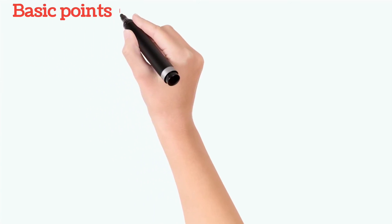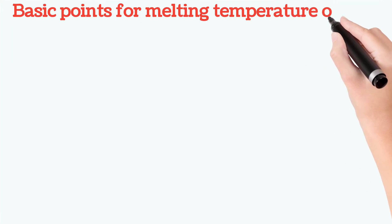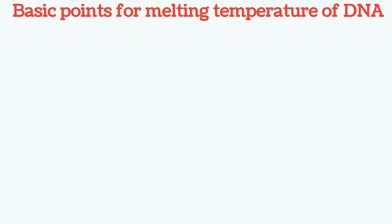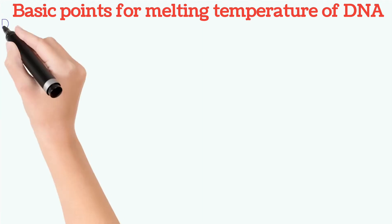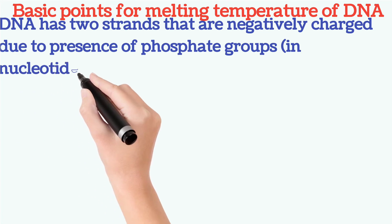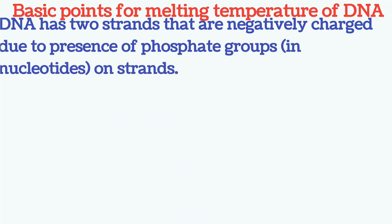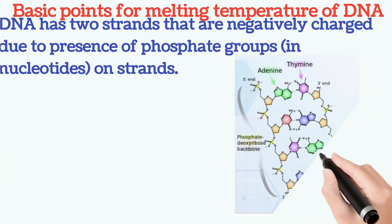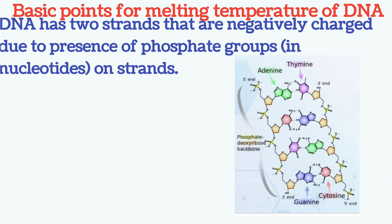In this video we'll learn about melting temperature of DNA. To understand the melting temperature concept, you should have some basic information. DNA is double-stranded, meaning it has two strands. These two strands contain nitrogenous bases along with sugar and phosphate molecules, forming nucleotide molecules. Due to the presence of phosphate, DNA strands have a net negative charge.